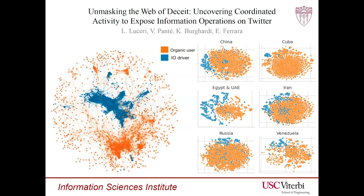As illustrated in the figure on the left, information operation drivers typically occupy a central position in the similarity network, whereas organic users are more peripheral. This highlights how node centrality can be effectively used to differentiate information operation drivers from organic users.